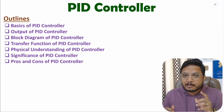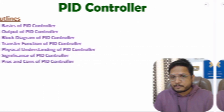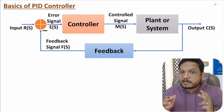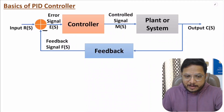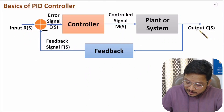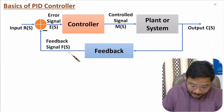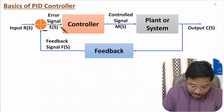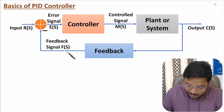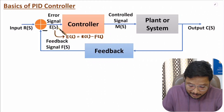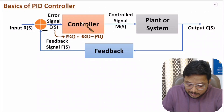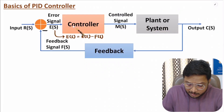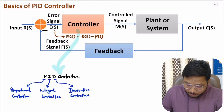We start with the basics of PID controller. Here we have a standard closed-loop control system where input is R(s) and output is C(s). We have negative feedback where feedback signal is F(s). This adder generates the error signal, that is input minus feedback signal, so error signal is R(s) minus F(s). This error signal is the input to the controller, and the controller generates a controlled signal given to the system or plant. Our controller will be a PID controller.